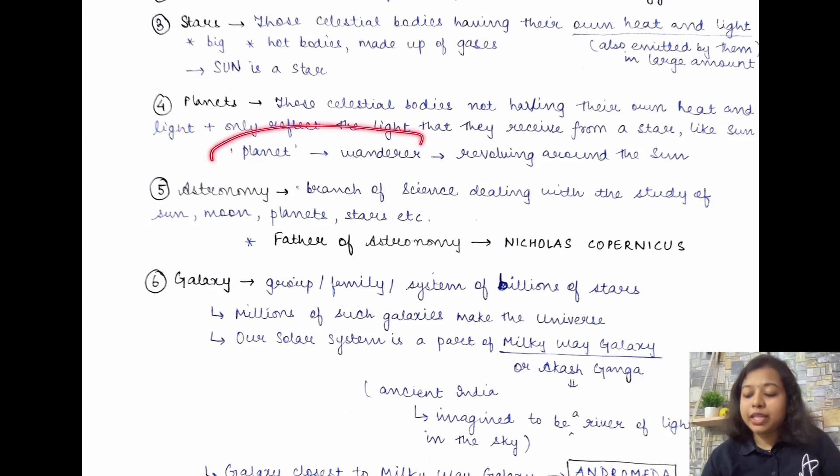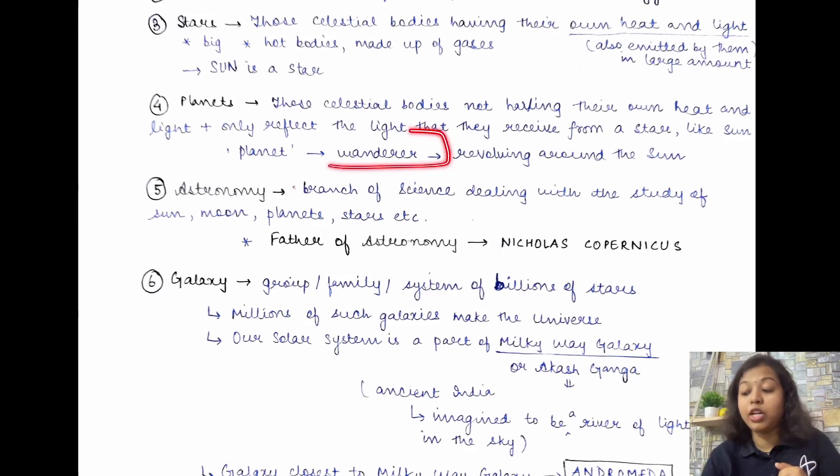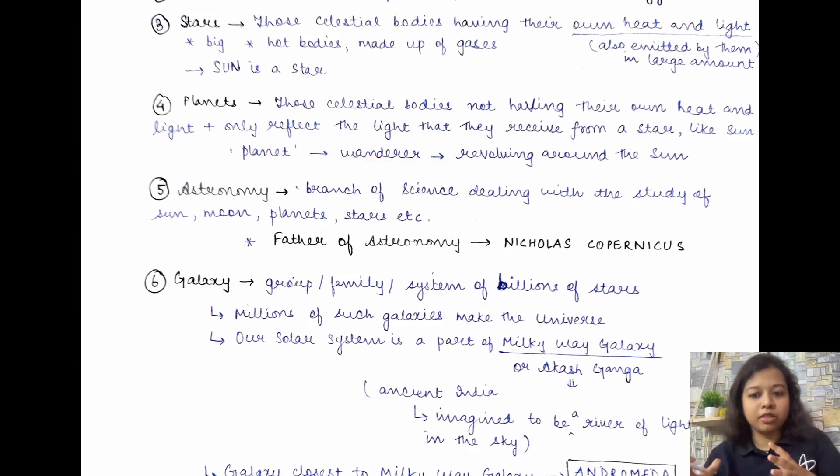Then, how do they get the light? So, they reflect the light that they receive from a star like sun. Sun se jo in ko light pahunch rahi hogi, usi ko phir reflect karte hai. In ka khud ka nahi hota hai. Now, the term planet has been derived from, you know, the planets, the term jo hai, uska matlab hota hai, basically, wanderer. Something that wanders. Matlab kuch jo ghoom raha hai. And we know that the planets revolve around the sun. We have already seen the motion of earth. We know earth is a planet. So, planets revolve around the sun. Wanderer term se jo hai, ho aaya hai.